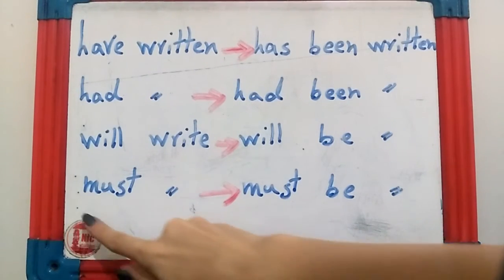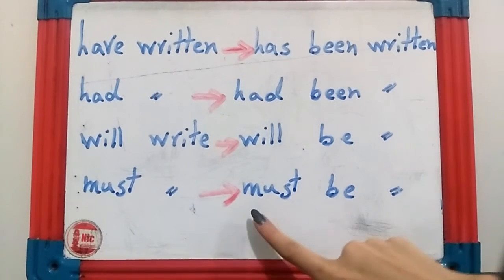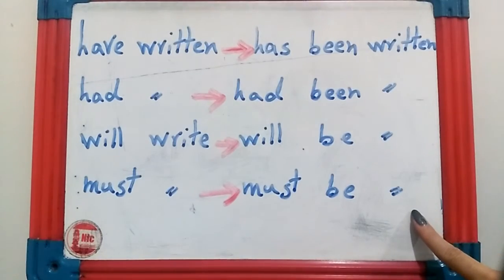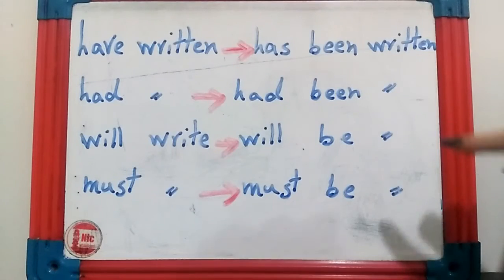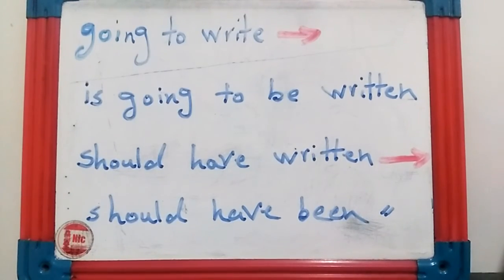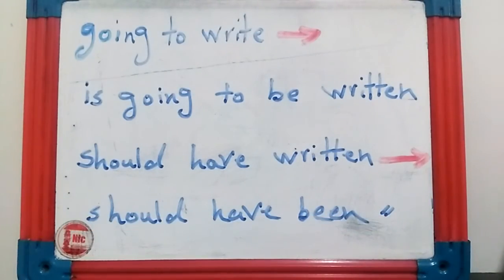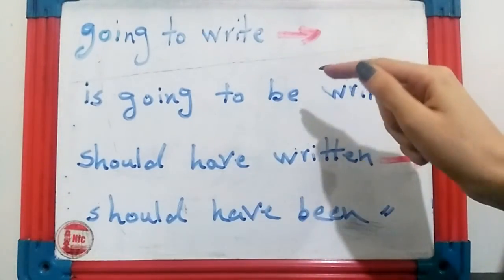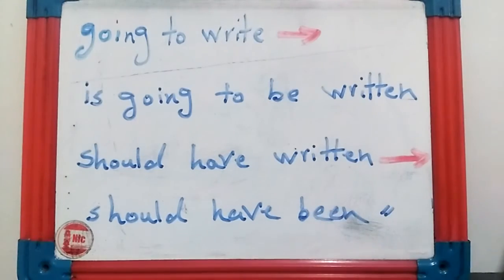If the sentence has a modal verb — for example 'must write' — 'must' is a modal verb. To convert it to passive, the structure is: must + be + past participle — so 'must be written.' For 'be going to': for example, 'I'm going to write a letter' — this is future be-going-to. The passive structure is: is going to be written — 'going to be' plus the past participle of the verb.